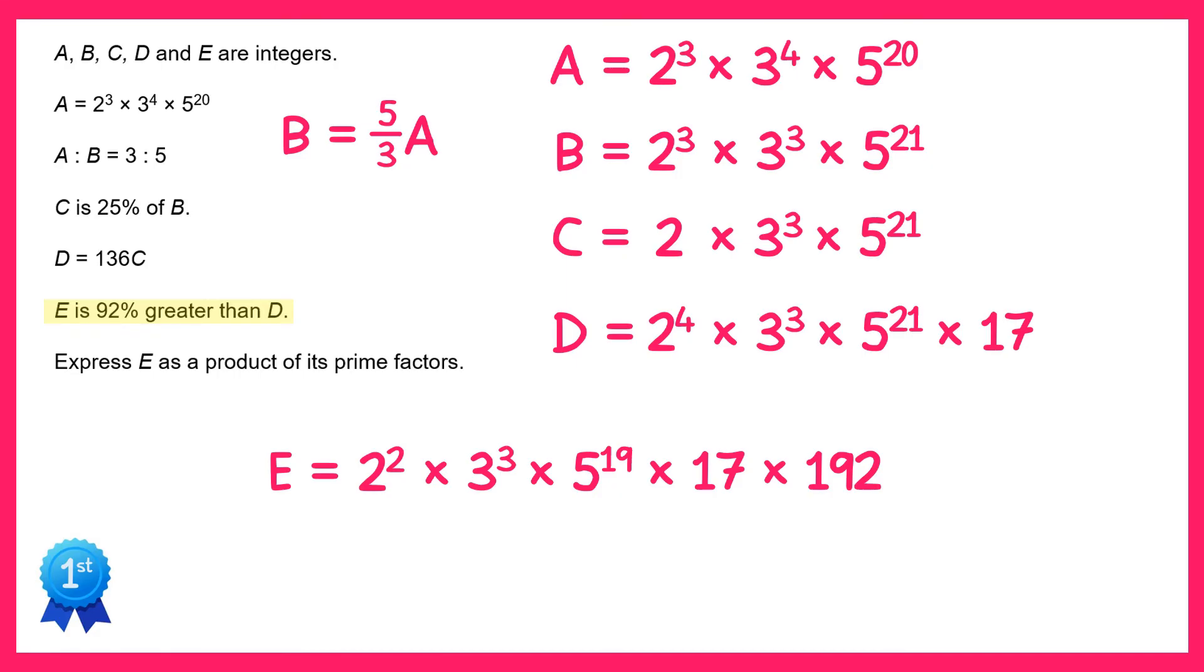Now we've got this 192 over here that's not a prime number so let's prime factorize that. It's 2 to the power 6 times 3. So we need to multiply the 2 squared by 2 to the power 6 and the 3 to the 3 by 3. This will give you 2 to the power 8 and 3 to the power 4. And now we have E in its prime factor form and that's the answer to the question.